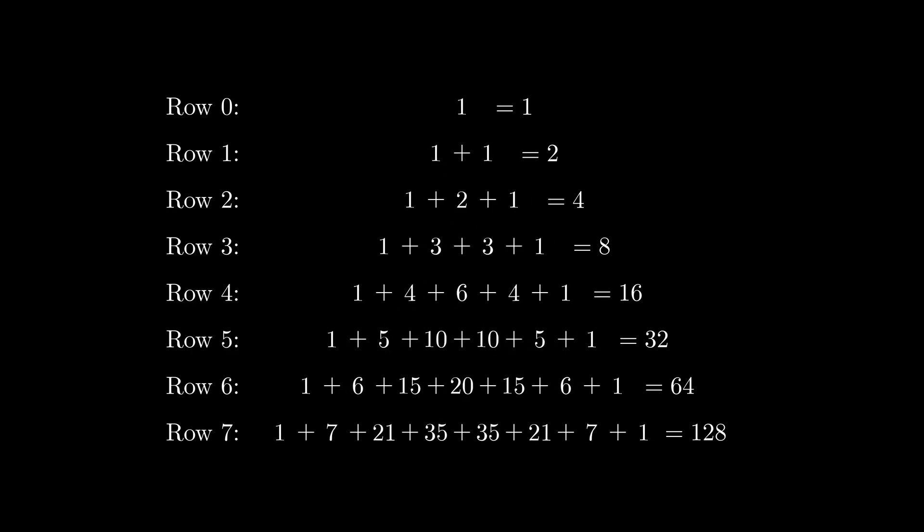Can you make a guess as to what the relationship is between a row's number and its sum? Most people at this point would guess that the sum of row n is equal to 2 to the power of n. Now is the hard part. Can we prove this?